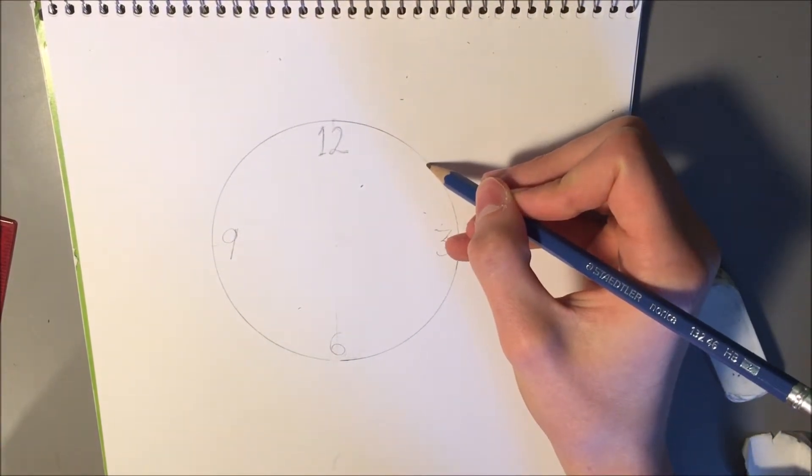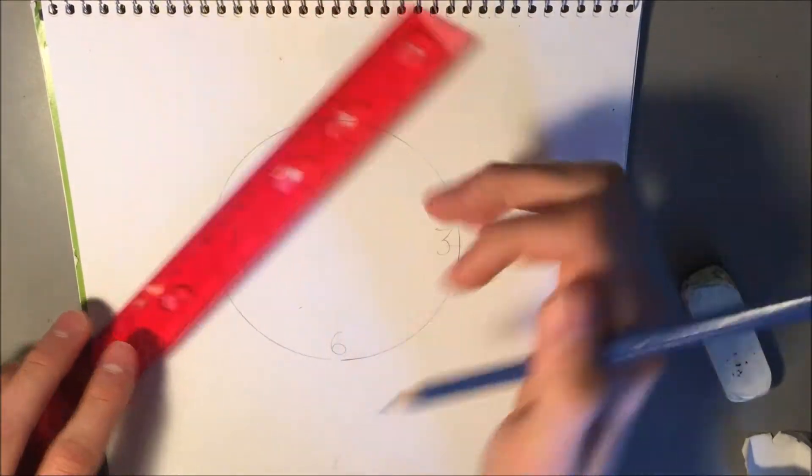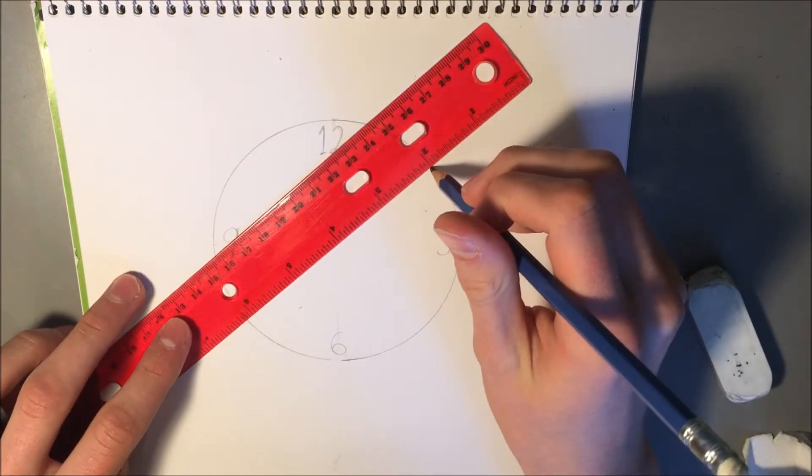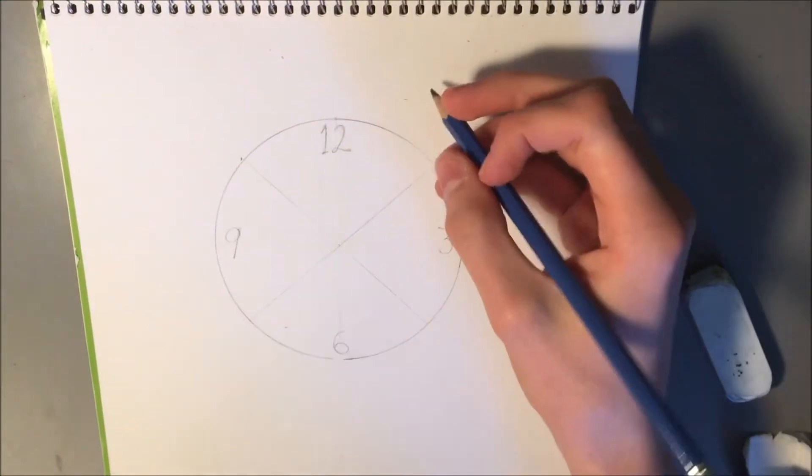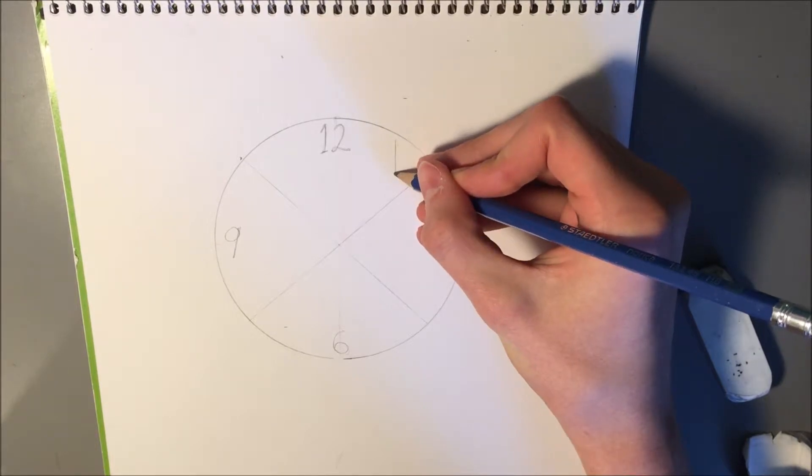Now draw two diagonal lines going through the center of your circle, keeping in mind that these are only guidelines for the rest of your numbers. Draw your numbers on either side of the lines you just drew.